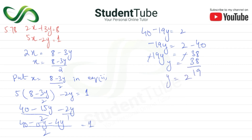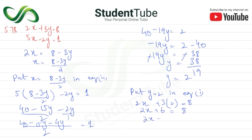Now putting y equals 2 back into equation 1: 2x plus 3 times 2 equals 8, so 2x plus 6 equals 8, then 2x equals 2, and x equals 2 upon 2, so x equals 1.